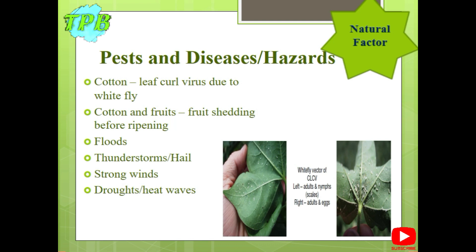July, August, and September is monsoon and post-monsoon time, which also brings floods. This is the time when cotton crops are standing in the fields. Thunderstorms, hail, and strong winds also affect crops adversely — strong winds can bend the crop, damaging or stopping its growth completely, and crops can also wither.